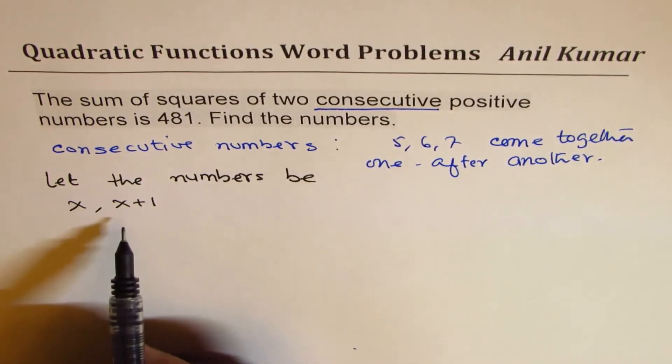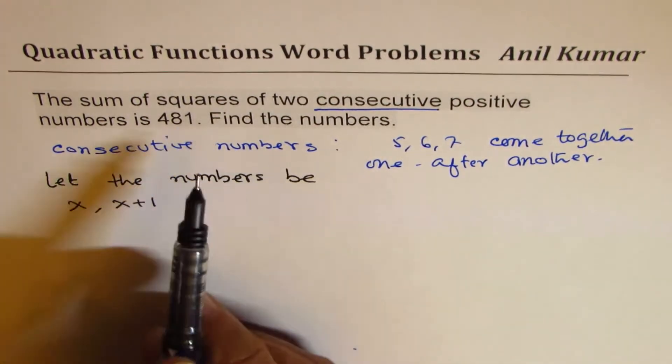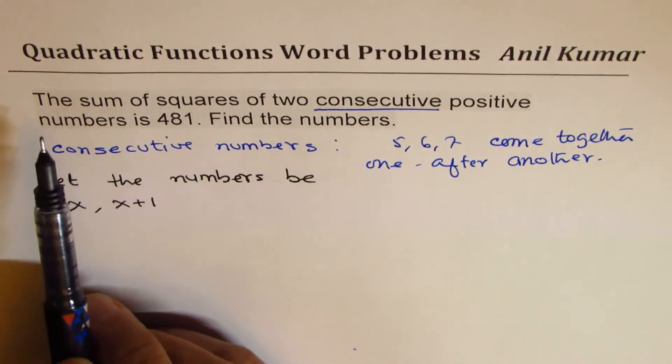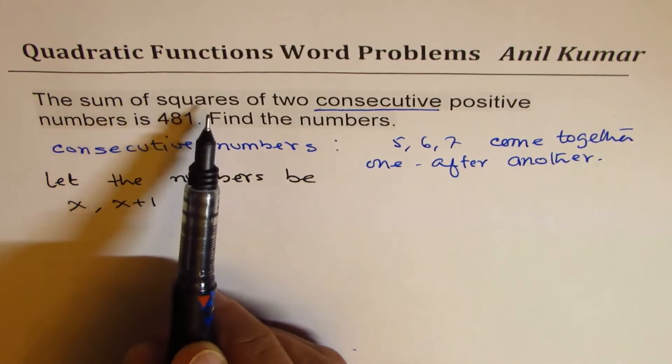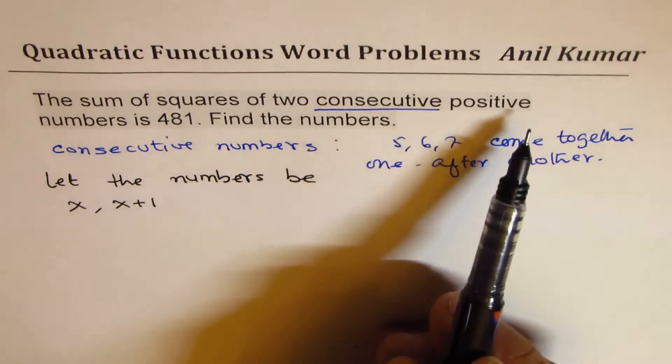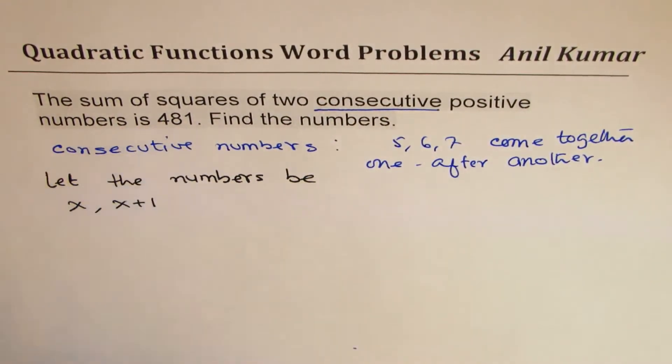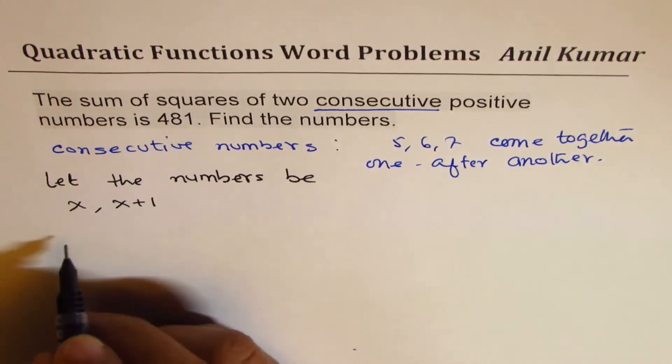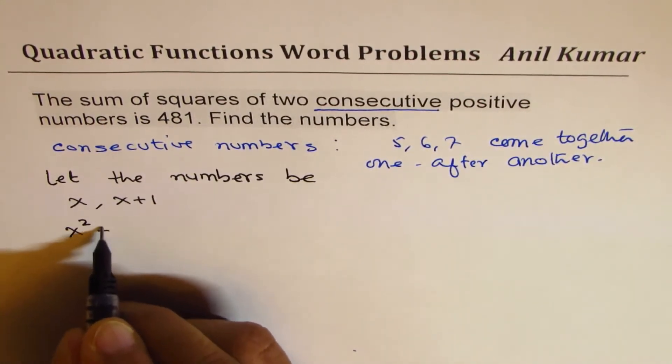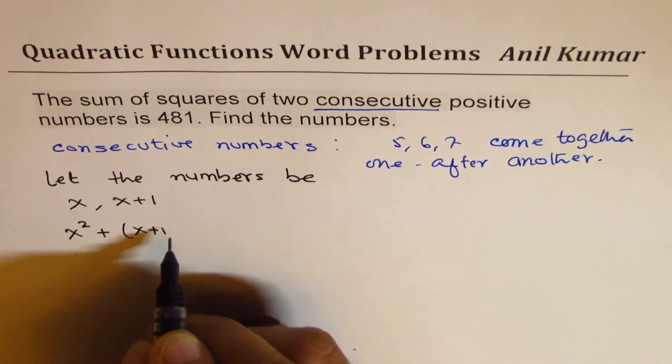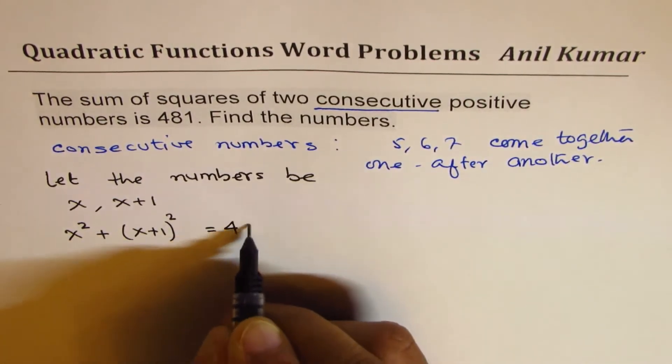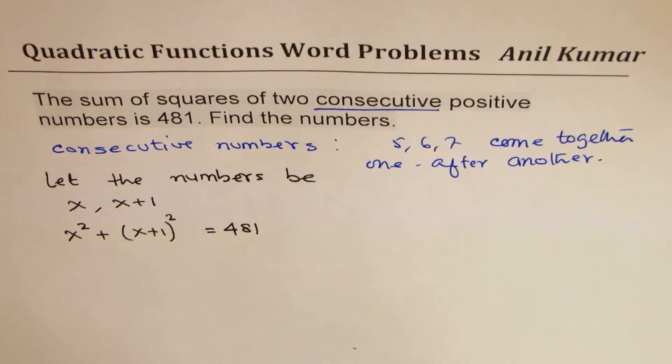So these are consecutive numbers. You could take x and x minus 1 also, but this is easier to form equations. The sum of squares of 2 consecutive positive numbers is 481. That means x squared plus (x plus 1) whole square equals 481. So that is how you get your equation.